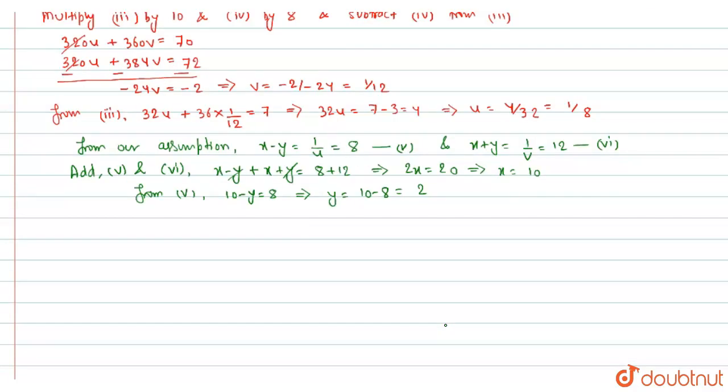So now we may write our answer as speed of boat in still water is 10 kilometer per hour and speed of stream is 2 kilometer per hour.